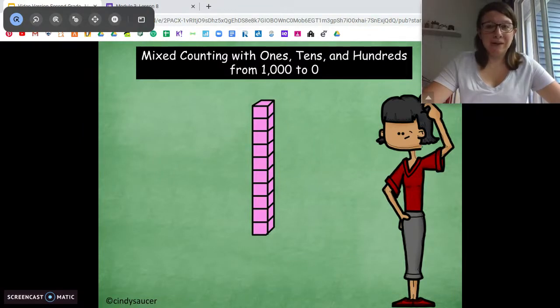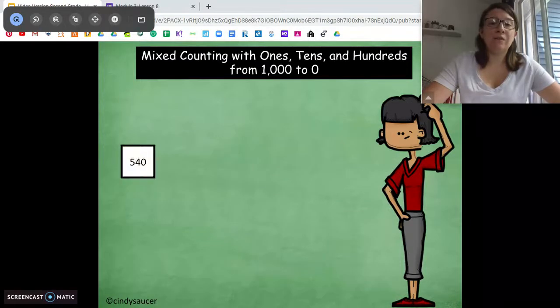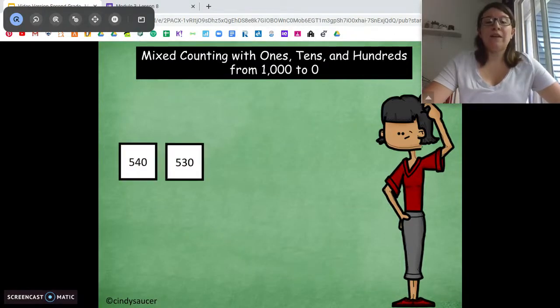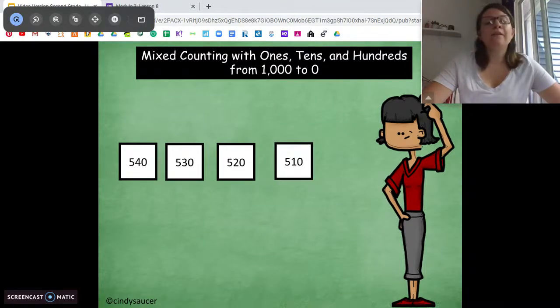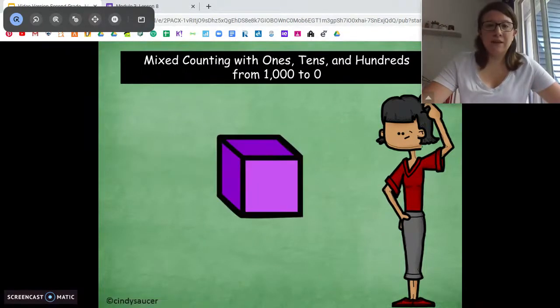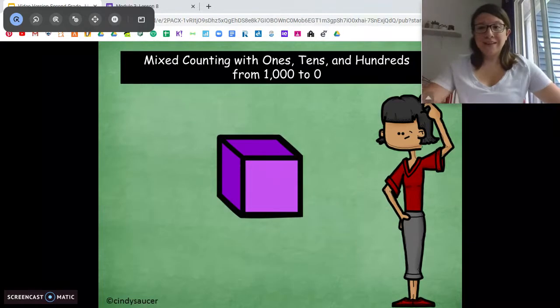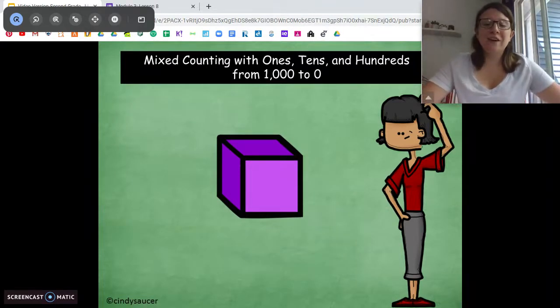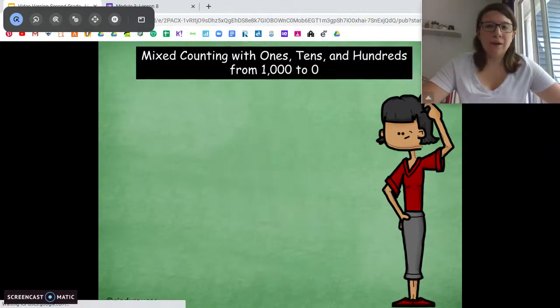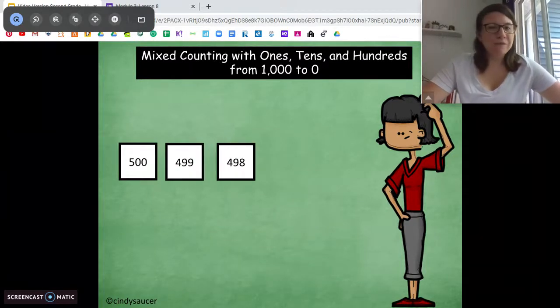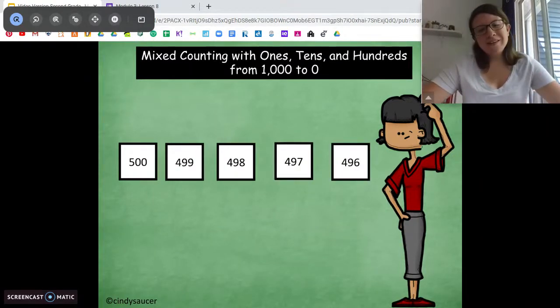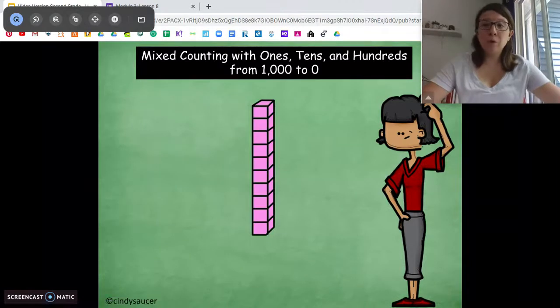Oh. Now what are we counting backwards by? Tens. Good. Starting at 540. 540, 530, just the tens place, 520, 510, 500. Now what? Ones. Very good. Starting at 500, count backwards by ones. 500, 499, 498, 497, 496, 495.